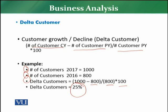This 25% positive delta means the number of customers has grown 25% versus the previous year. If delta customers were negative, it would mean the number of customers has decreased and declined versus the previous year. A retailer's goal is to keep both delta sales and delta customers positive — if both grow, the retailer's business will flourish over the longer period of time.